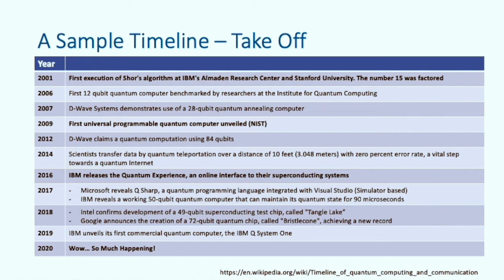From 2000 onwards things really start to take off and we see the growth in the hardware. The physical computers themselves that are needed to realize the theoretical potential discovered during the previous 20 years. Some things worth noting on this timeline are in 2001 we see the first execution of Shor's algorithm on an actual quantum computer. It was very limited just factoring the number 15. In 2009 the first universal programmable quantum computer is unveiled at NIST.